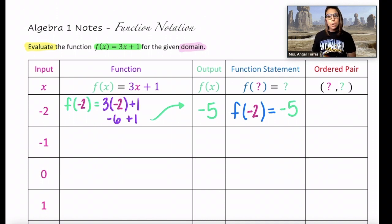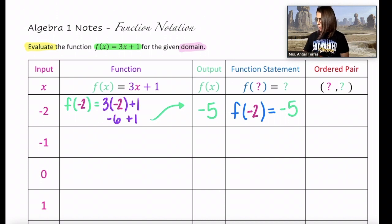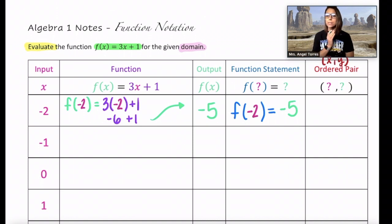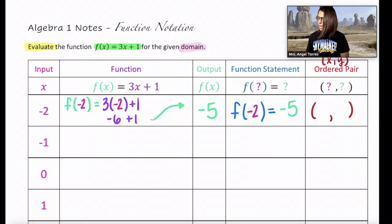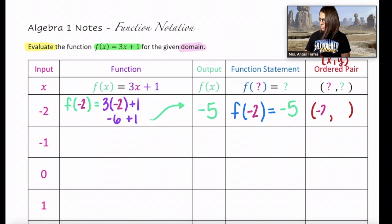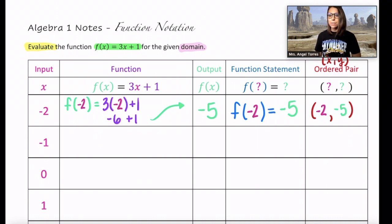Finally, if we're going to eventually graph this, we need to put this into an ordered pair. Remember, ordered pairs are always x comma y — your input first, then your output. Our input here was negative 2, and our output was negative 5. So for this function, when x is negative 2, our output is negative 5, giving us the ordered pair (negative 2, negative 5).